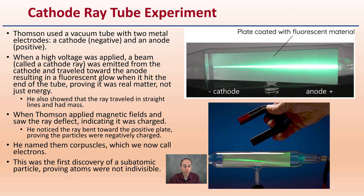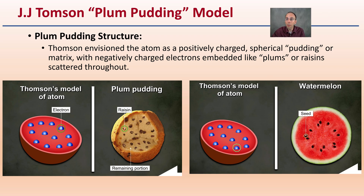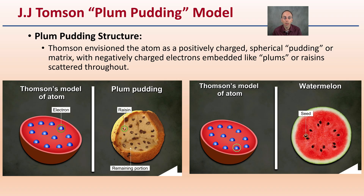That's where he started to call these particles electrons. This was the first discovery of a subatomic particle, proving that atoms are not indivisible. He also came up with what's called the plum pudding model. Thompson envisioned the atom as a positively charged spherical pudding, or matrix, with negatively charged electrons embedded like plums or raisins scattered throughout. We could think of it in more modern terms as a watermelon with seeds inside the red portion.